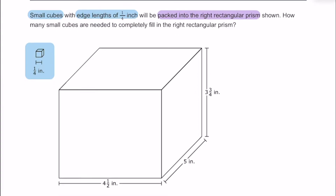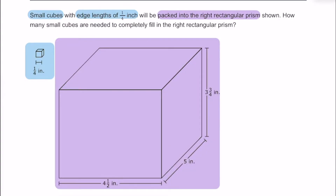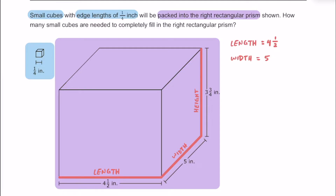Here's that prism. If we're taking a look at this right rectangular prism, we can go ahead and label this dimension the length — the length here is going to be four and one half inches. We can label this dimension the width, and that dimension is going to be five inches. And we can label this dimension the height, which measures three and three fourths inches tall.